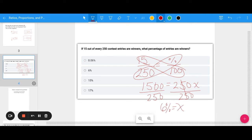A shortcut here: really what we did is we just did 15 divided by 250, which is 0.06. Then to turn it into a percent, we multiply by a hundred. The same steps get us to 6%. So 6% is the percentage of entries that are winners.